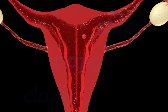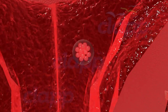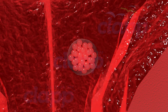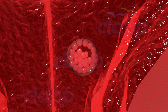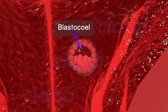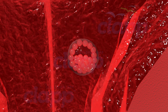As the morula enters the uterus, it gets a rich supply of nutrients. The outer peripheral cells enlarge and flatten further, forming a trophoblast or trophectoderm. The trophoblast cells secrete a fluid into the interior, creating a cavity called blastocele. With the formation of blastocele, the morula is converted into blastula, called a blastocyst because of the peculiar cyst-like arrangement of blastomeres.